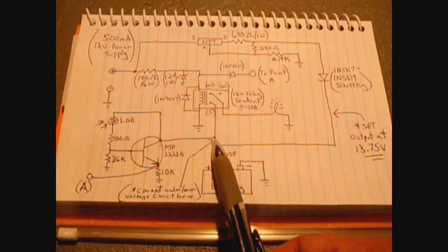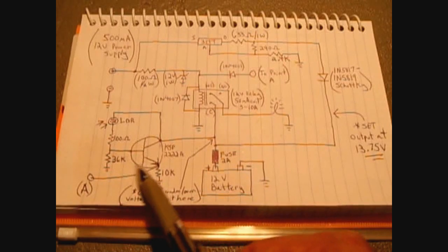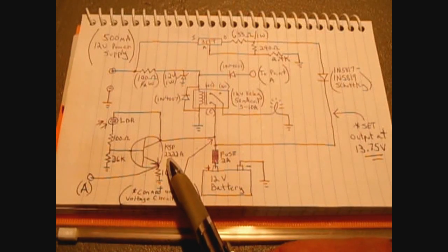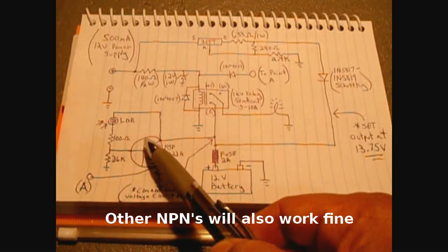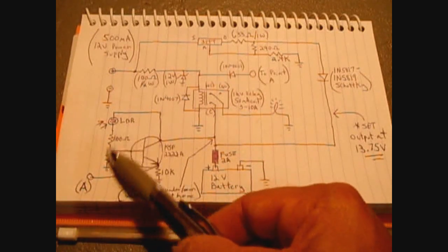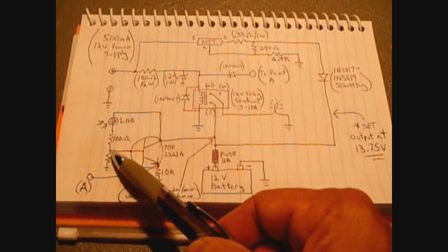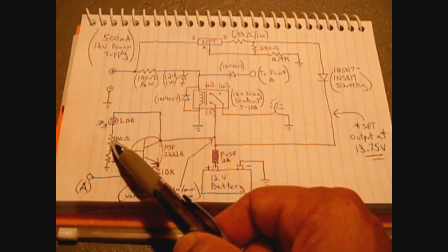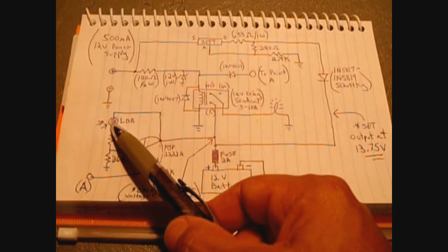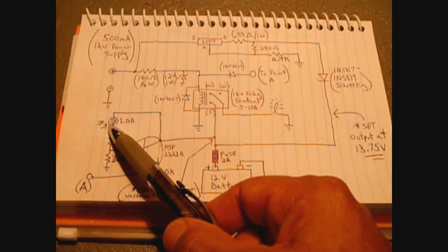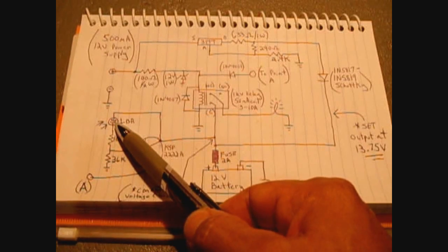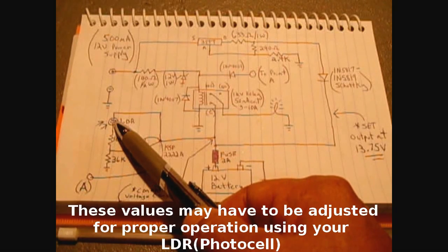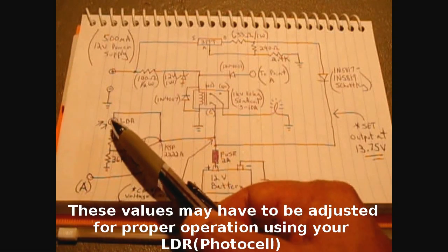From this point right here after the battery, it goes into an NPN transistor. I use the 2222A. The emitter has a 10K resistor to ground. The base goes over to a voltage divider setup. I have a 36K to ground and then a 100 ohm connecting into an LDR, a light dependent resistor, which goes to the collector. The one I use in bright light goes to a few hundred ohms and in total darkness it goes to 2 to 3 million ohms. So that's the range of this one.